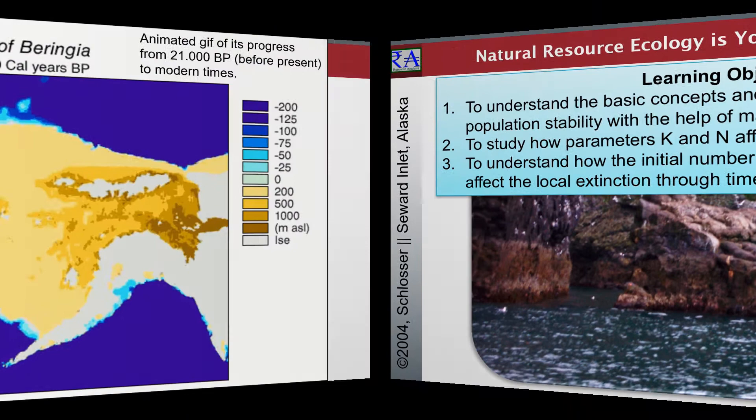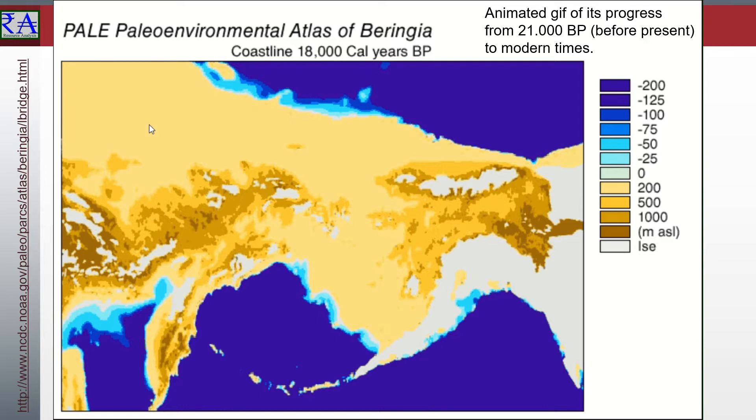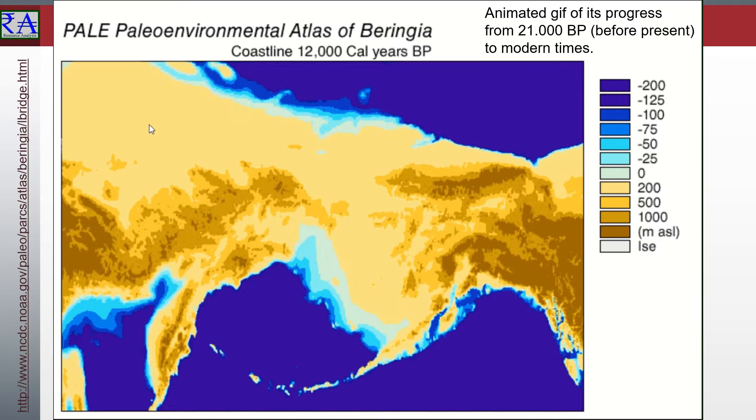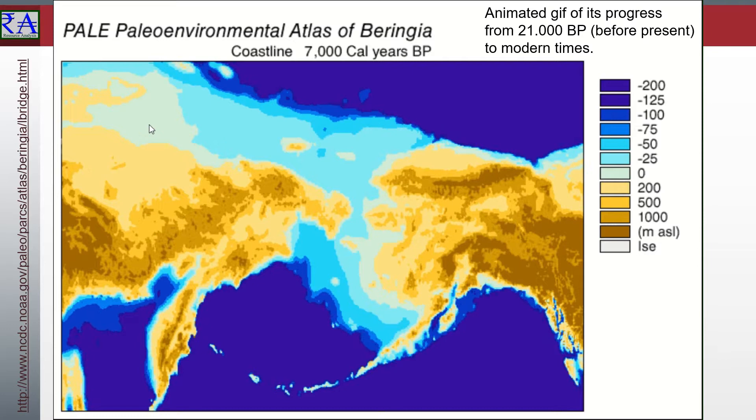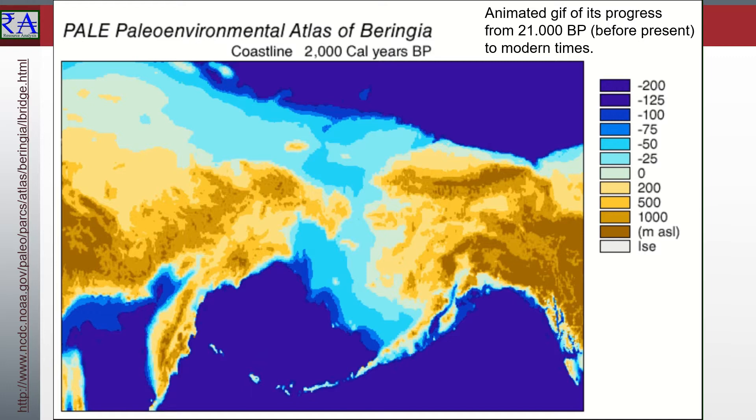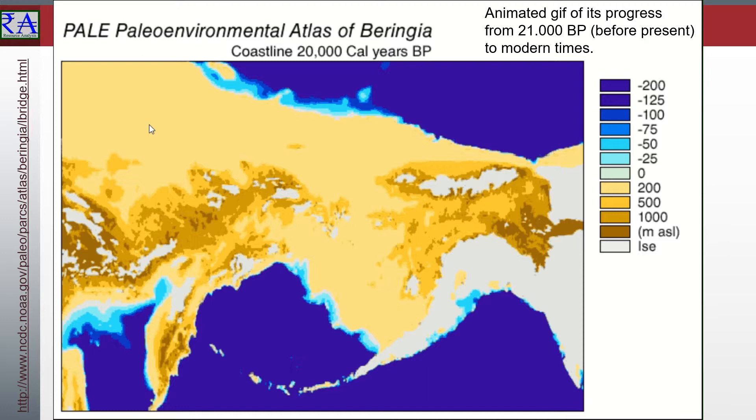I take you back a few lectures to remember the paleotour we went through, looking back in time about 21,000 years. We have been here before, and I bring it up again in the context of metapopulations, and will again as we expand the topic to the next metapopulation step, which is speciation. At the time on the screen, the current ice age was at its freezing crescendo.